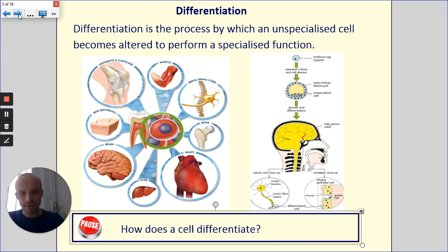So pause for a second and just think, how does a cell become specialized? How does it become different to the original stem cell?